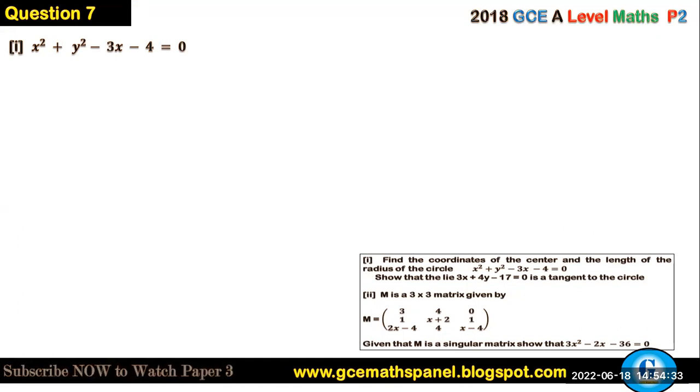Using the general equation of the circle x squared plus y squared plus 2gx plus 2fy plus c equals zero, this implies that our 2g is equal to minus 3, which gives us g equals minus 3 over 2. And 2f equals zero because there's no y here, so f equals zero.